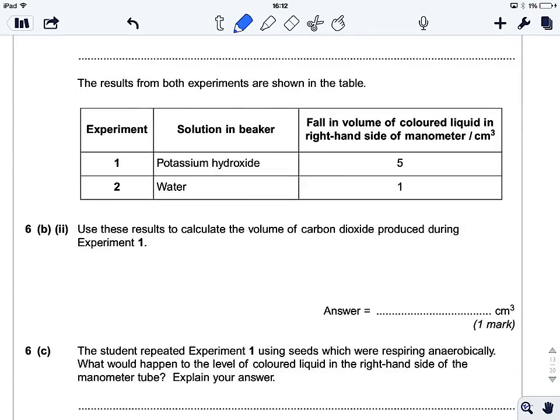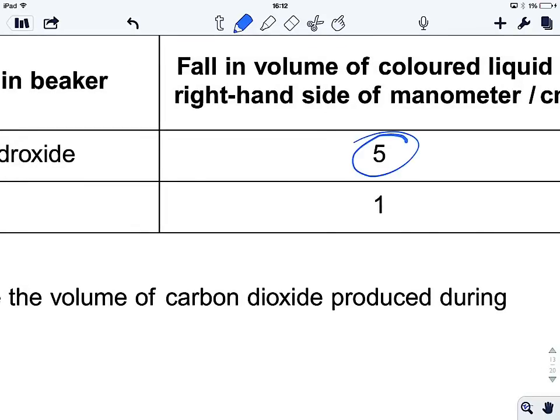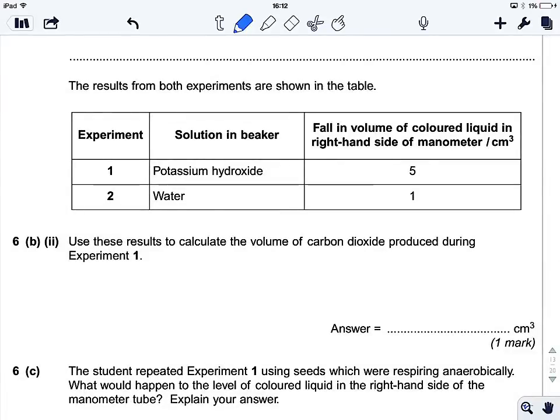The results from both experiments are shown in the table. So, experiment one had the potassium hydroxide. Experiment two just had water. There was a larger fall here in the first experiment compared to the second experiment. Nice and straightforward. So, what is it going to ask us to do? Use these results to calculate the volume of carbon dioxide produced during experiment one.